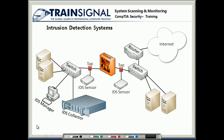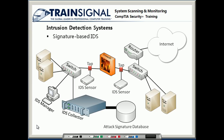Now let's take a look at the difference between a signature-based and an anomaly-based IDS system. With a signature-based IDS system, you get an attack signature database that keeps records of all of the different types of attacks that might occur on your network. Any time a sensor sends information down to your collector, it will compare that information against the attack database, and if it finds a match, it knows that you're under attack.